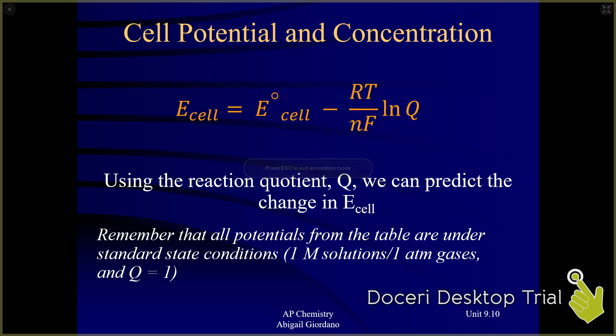Reaction quotients can only include gases or aqueous things, and under standard state they'd always be at concentrations or pressures of one. If Q equals one, the natural log of one is zero, so this whole part cancels out — it would just be zero. Under standard state conditions, we're just dealing with standard E cell.